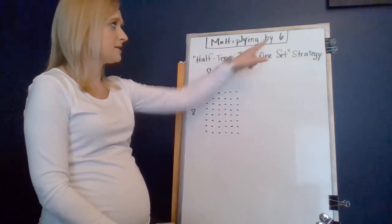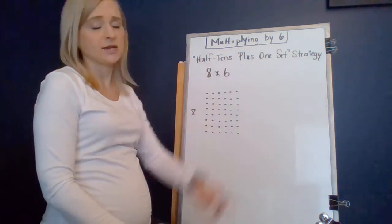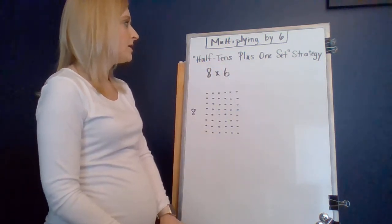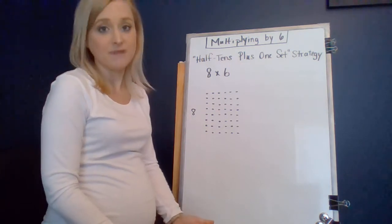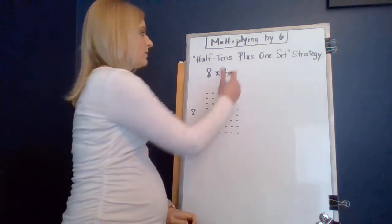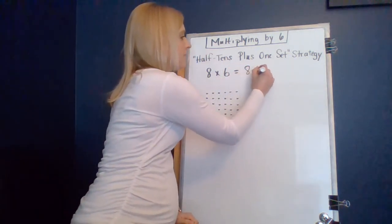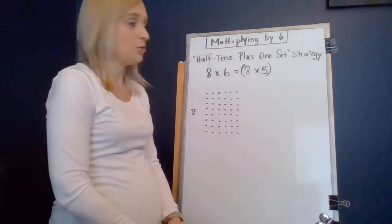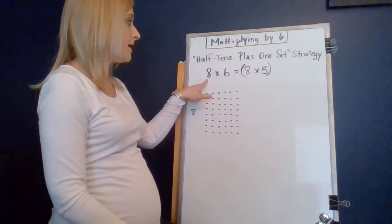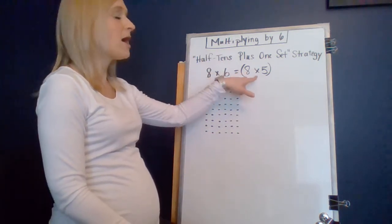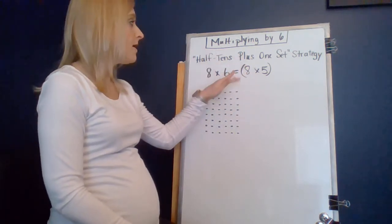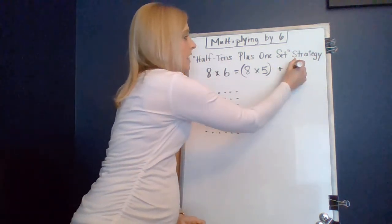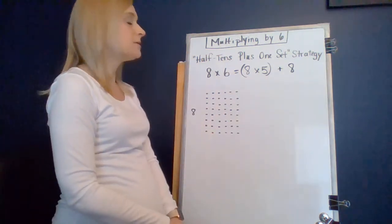We can use the multiplying by 6 strategy called the half 10 plus 1 set strategy, and it is what it says in its title. Basically, we are going to multiply 8 times 5 because 5 is half a 10, and that's where that's playing off of. So 8 times 5 first. But we need to add one more set of 8 to that, because we just multiplied 8 times 6, and 8 times 6 is not 8 times 5. So in order for it to be equal to this side, we're going to have to add another set of 8 to that, so that in all, we have 6 groups of 8.